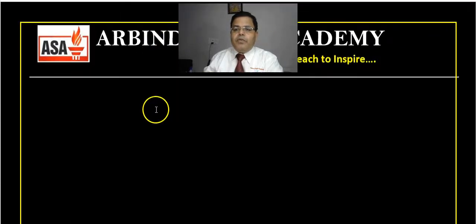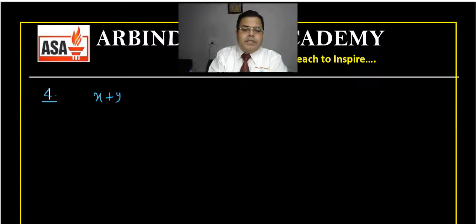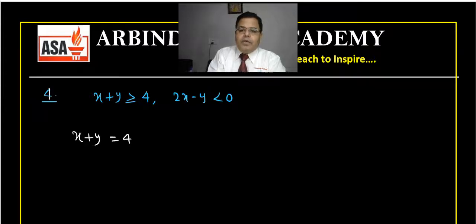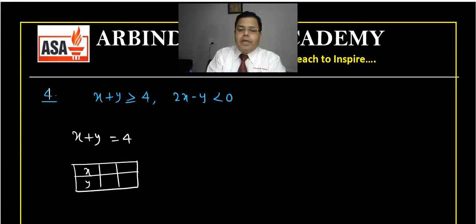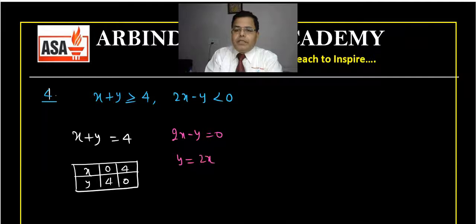Now question number 4. The question is: x + y ≥ 4 and 2x − y < 0. The corresponding equations are x + y = 4 and 2x − y = 0. For x + y = 4: points are (0, 4) and (4, 0). For 2x − y = 0: rearranging gives y = 2x, so this line passes through the origin.